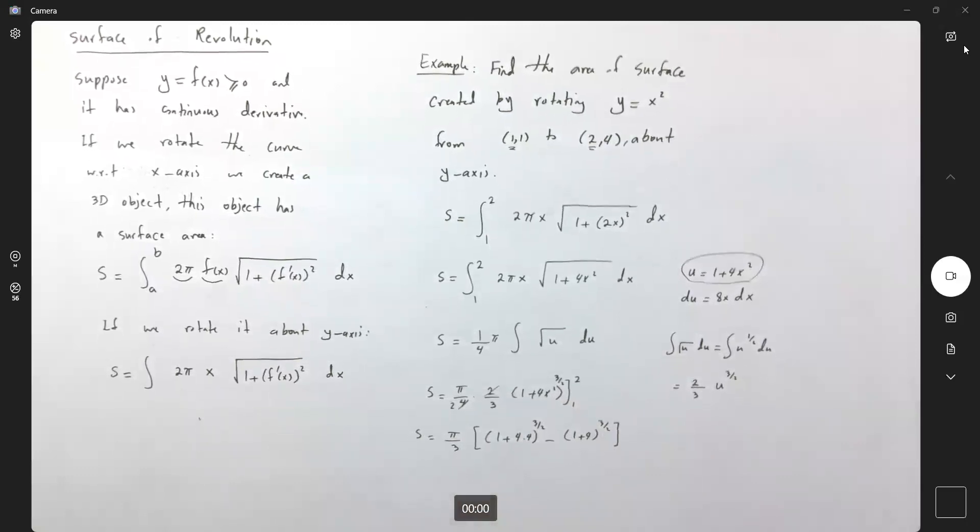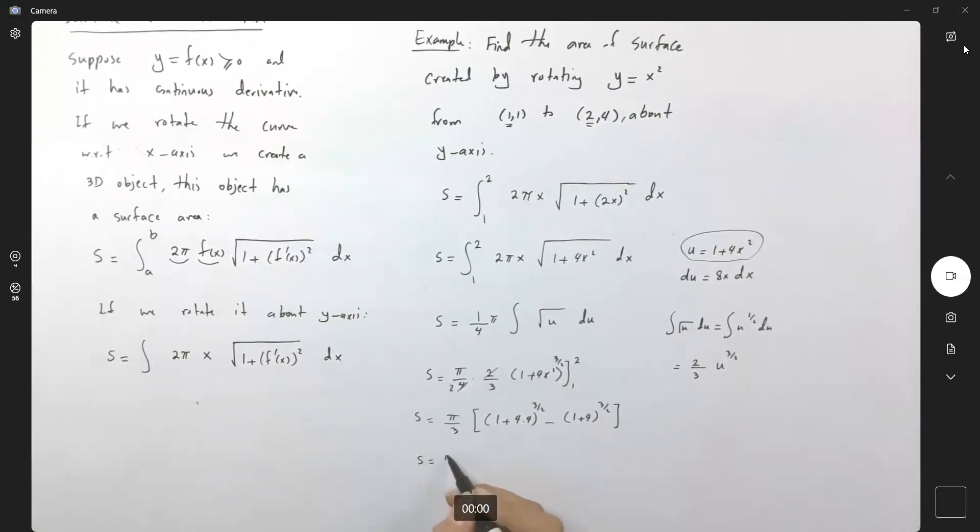So let us simplify this as much as we can. s equals pi over 6 times (17 times square root of 17 minus 5 times square root of 5). You can use a calculator to simplify this as well.